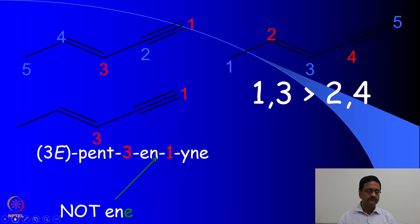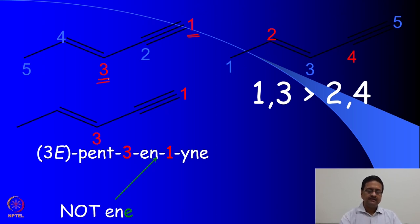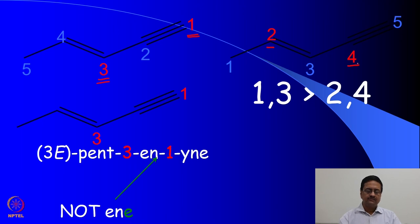In these examples we have a situation where we can identify both a double bond and a triple bond in the molecule. Depending on from which side we number, those double and triple bonds get different numbering. When numbering from the right-hand side giving priority to the triple bond, the numbers are 1, 2, 3, 4 and 5, so the triple bond and double bond are at positions 1 and 3. If we number from the other end, the positions become 2 and 4. We need to remember that the sum of these two numbers should be the lowest for a correct numbering. The sum of 1 and 3 is 4, while 2 and 4 gives a sum of 6, so the first numbering gets priority.